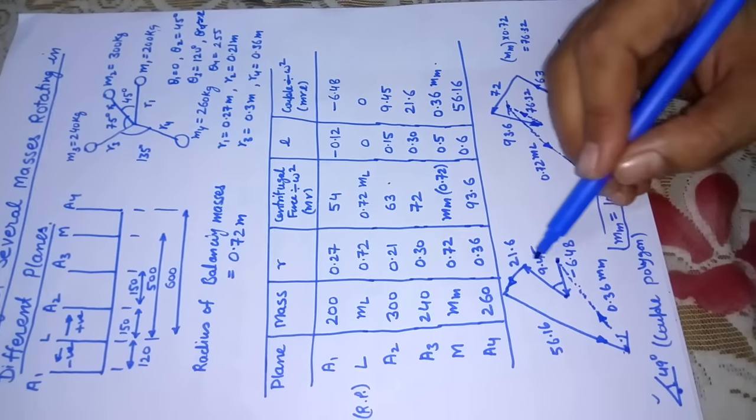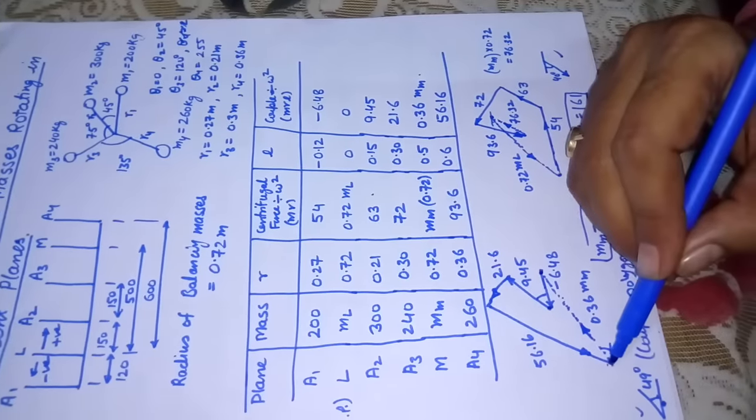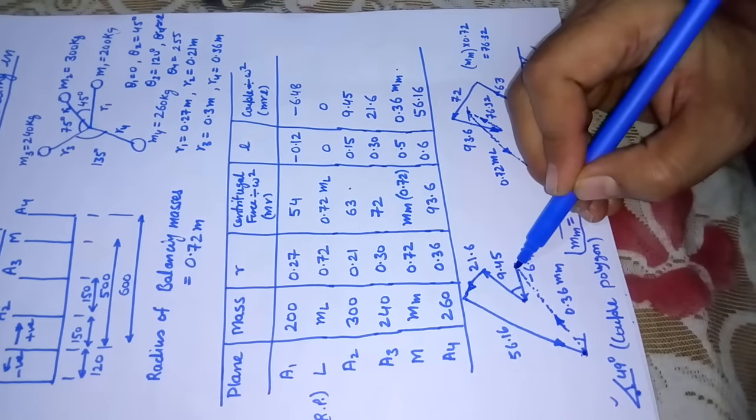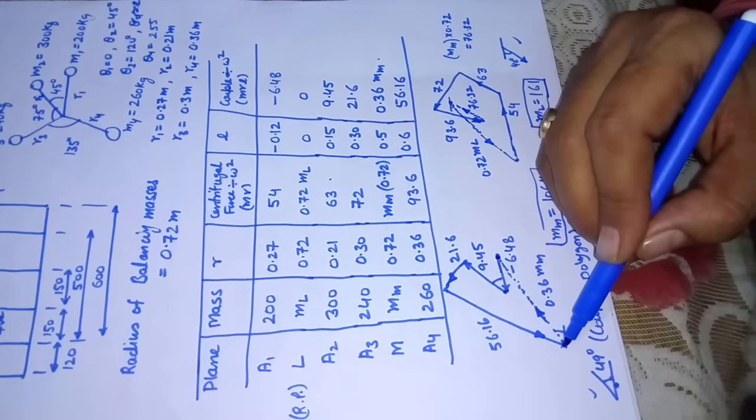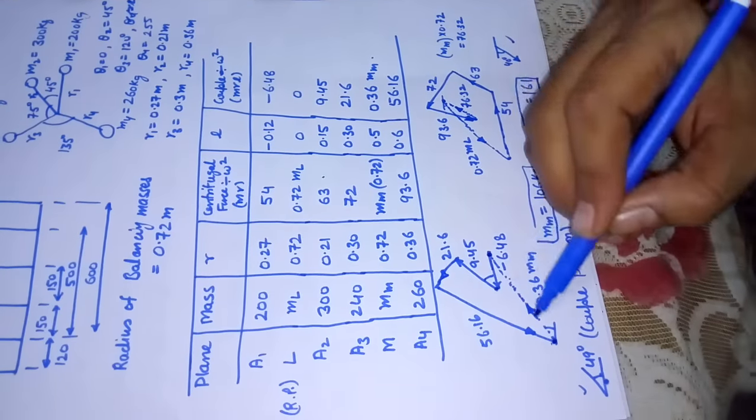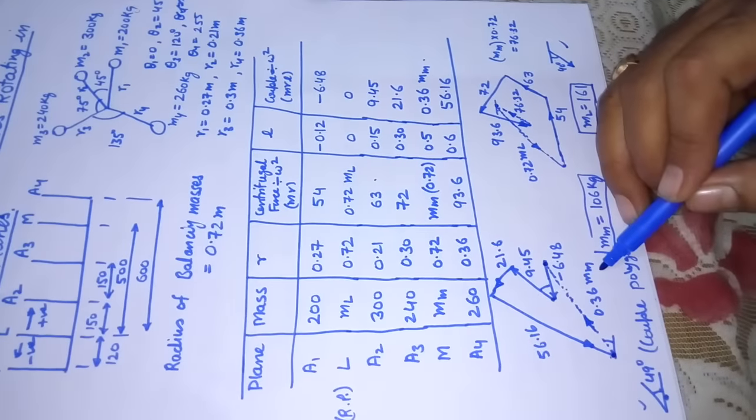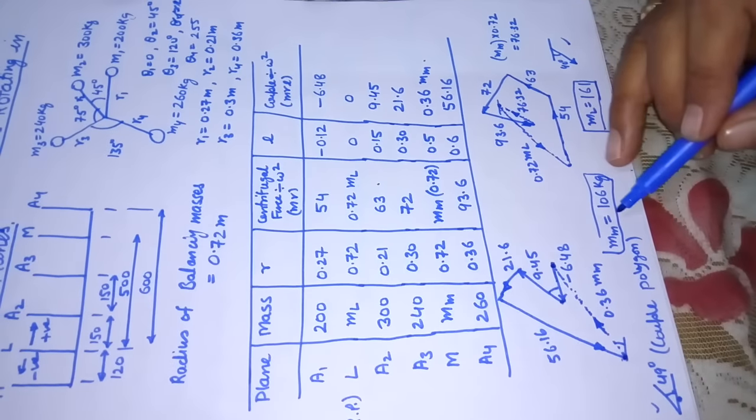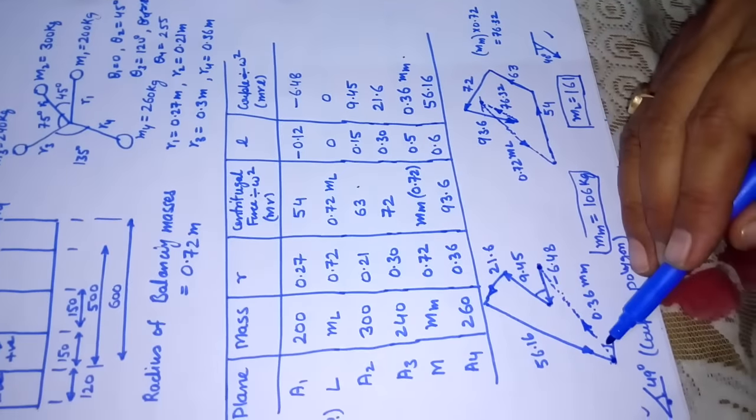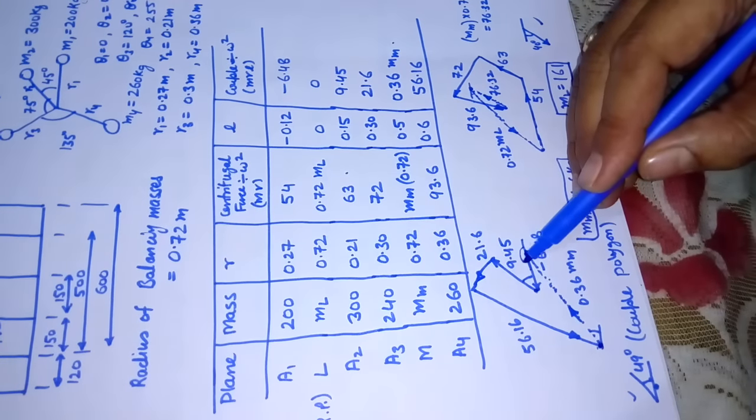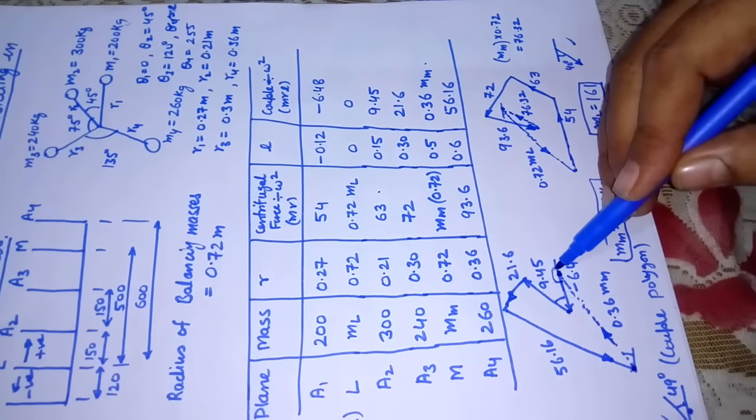After this we will go to 21.6, parallel to m3 direction. Then m4, parallel to m4 we have 56.16. This is drawn like this. Now this is the last point, this is the first point. We know that this all is going to make a closed polygon for balancing. The closing side, if I join the last point with the initial point, will give me the value of unknown side, that is 0.36 mm. I'll measure this and convert it as per my scale. The value of mm is going to be 106 kg, and angle can also be obtained by measuring with respect to the zero axis.